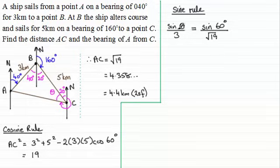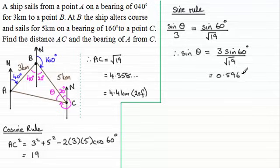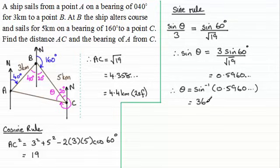So just rearrange this for sine theta by multiplying both sides by 3. So you end up with sine theta equals 3 times the sine of 60 degrees divided by the square root of 19. Then if you work this out on your calculator you should find you get 0.5960 and so on. And so to get angle theta all we need to do is take the inverse sine of 0.5960 and so on. Don't forget to work in degrees mode on your calculator and if you do you should find you get 36.586 and so on degrees.